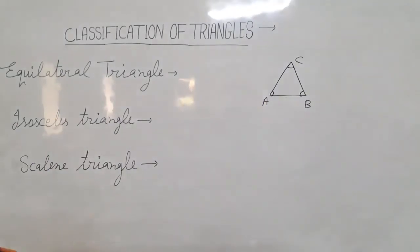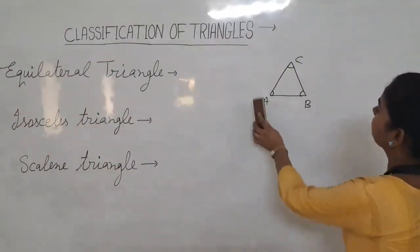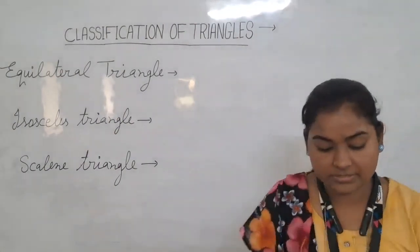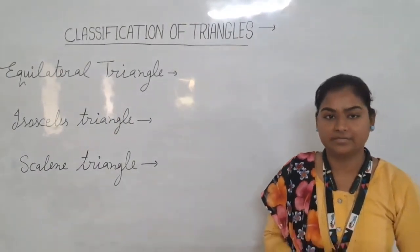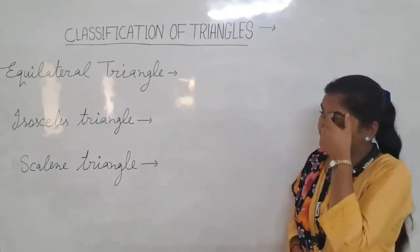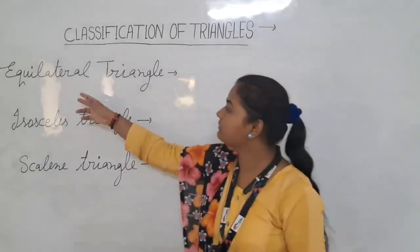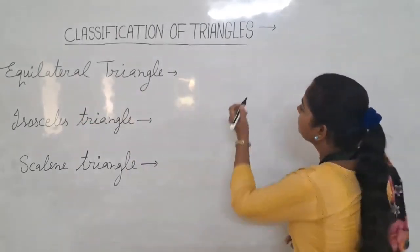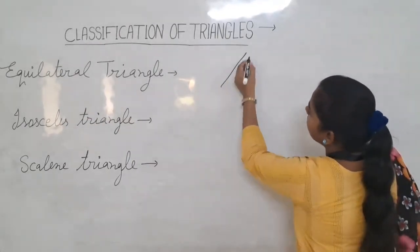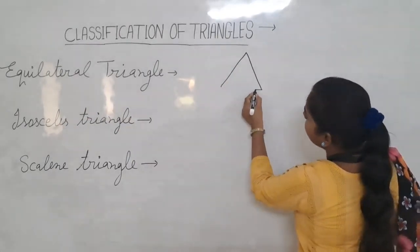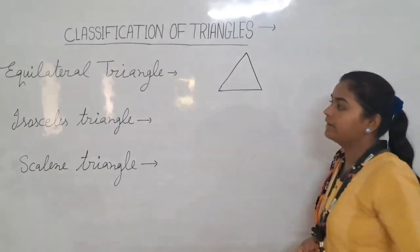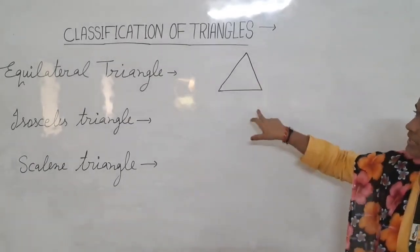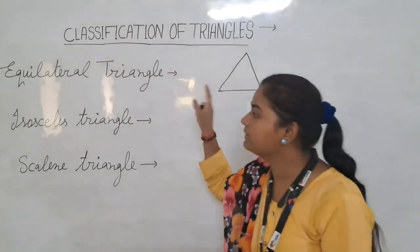Now we take the next classification of triangles. According to triangles, it is based on sides. We have three triangles. First, we have an equilateral triangle. An equilateral triangle means one in which we have three sides and all three sides are equal. That is an equilateral triangle.